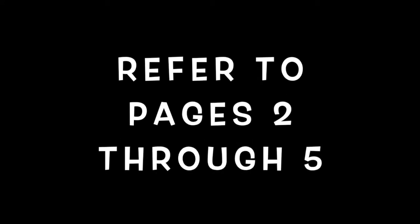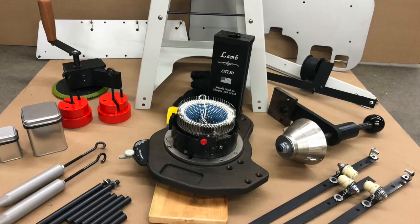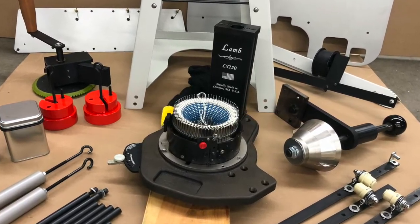Open each box but only unpack the contents of boxes 2 and 3. Referring to pages 2 through 5 of your assembly manual, confirm that you have all the tools, parts, and hardware to assemble your machine.